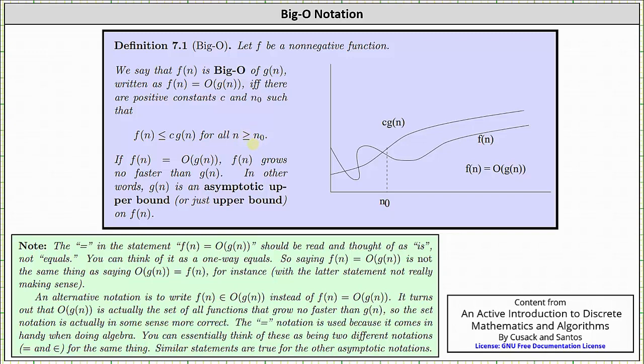Looking at the graph for a moment, if our given function is f(n), the lower function, notice that c times g(n) is the upper function for all n greater than or equal to n₀, where n₀ is some value on the horizontal axis.